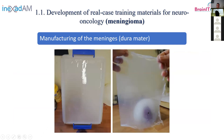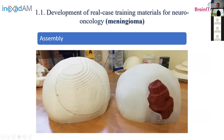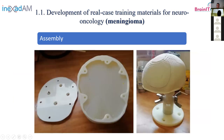In the background you can see the brain. We put the tumor inside the brain, and this is the meninges that we placed on the brain. We placed the meninges — the duramater — over the brain, then placed the brain inside the skull and closed it with screws. Finally, using the holes, we tied the complete skull to the holder that allows orientation of the synthetic models for the training session.